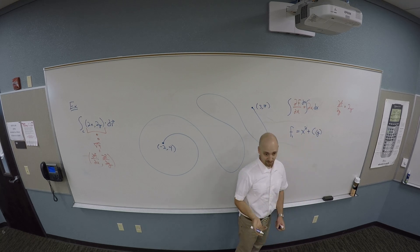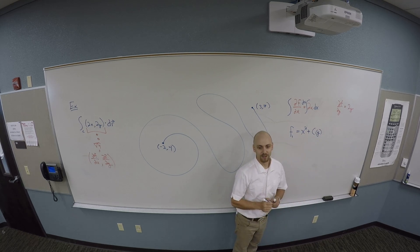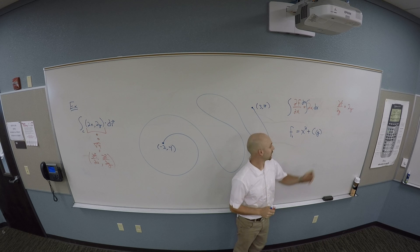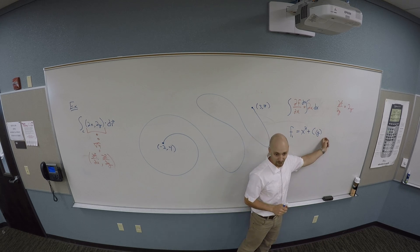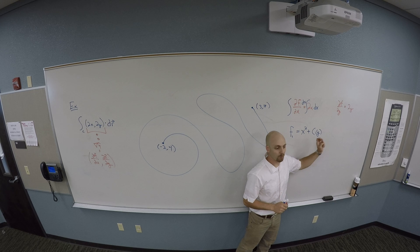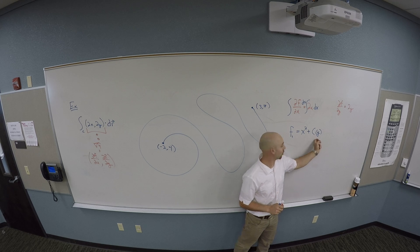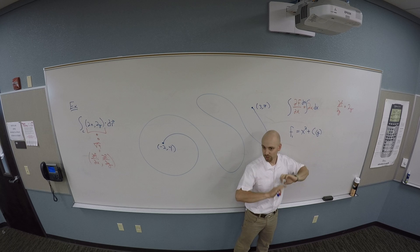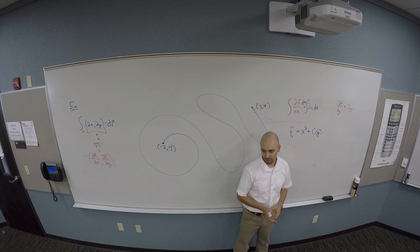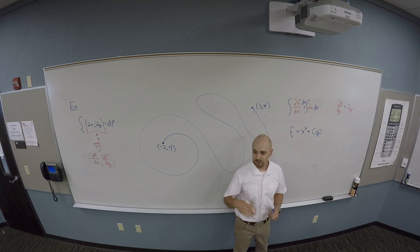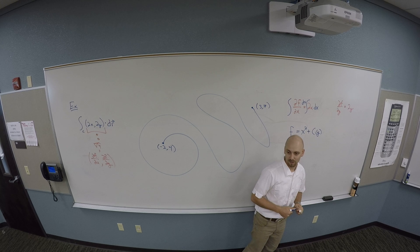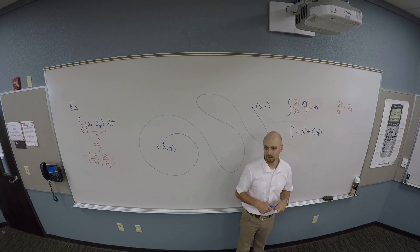Note that in three dimensions, the constant can be a function of both the other variables. In two dimensions it can only be the other variable; in three, it can be a function of both of the other two. So these get harder.